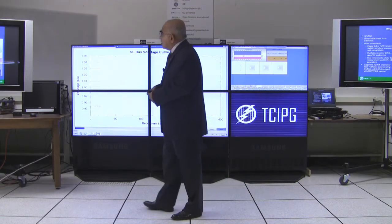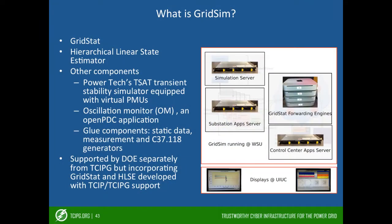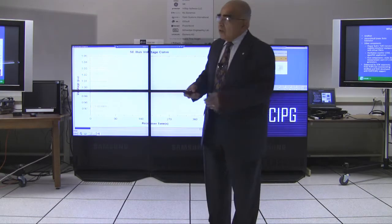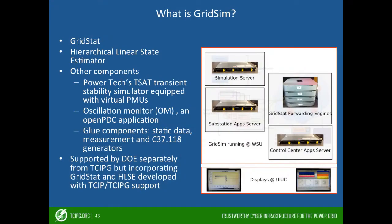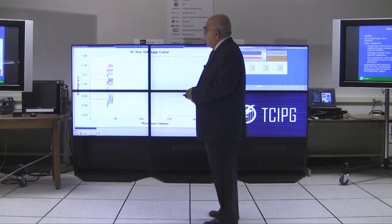To show what GRIDSTAT is made up of: there is the simulation server where the power grid is simulated. It produces all the substation data, which is placed on one server here — but in real life it would be on different gateways at the different substations. Then there is the forwarding engine, which is GRIDSTAT, taking the substation data and forwarding it to all the control center applications: the oscillation monitor and the state estimator display.